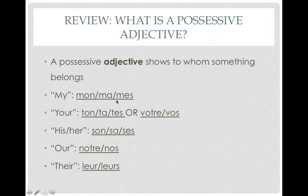It's important to remember that when we are choosing these, it's based on the object — whether the object is singular masculine, singular feminine, or plural. It has nothing to do with the speaker. So although I'm female, if I'm talking about a masculine object, I'm still going to use mon. And if you're a guy, it's ma based on the object. Think about the object, not the subject.